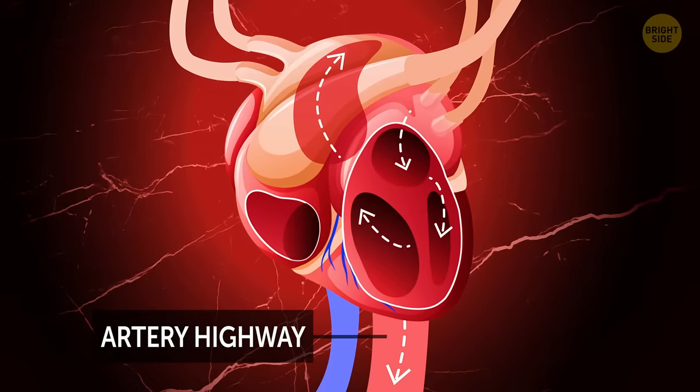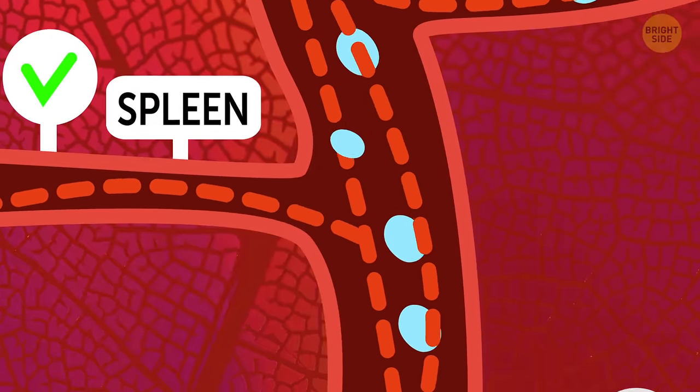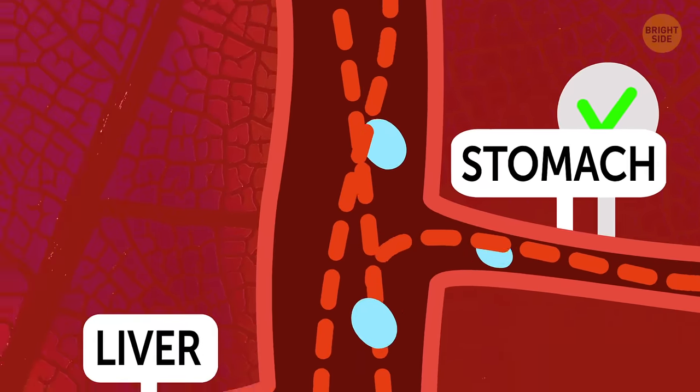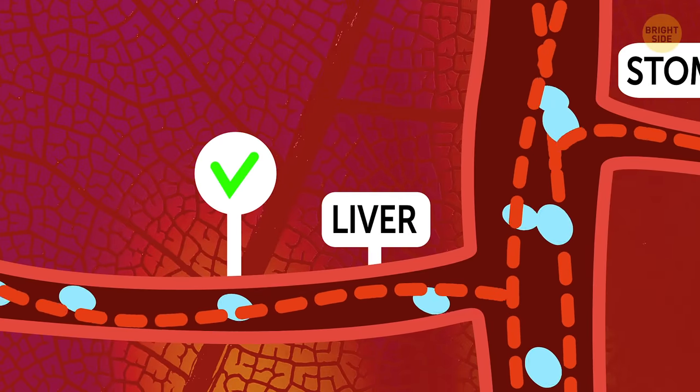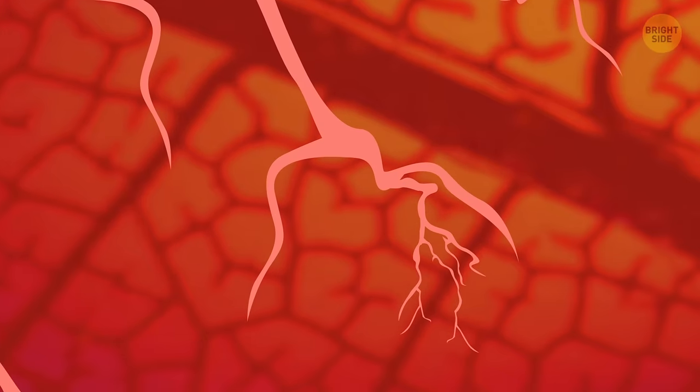Hey, don't worry, we'll be back soon enough. We're rushing fast through the body delivering this oxygen supply to every organ, muscle, tissue, and cell. Oxygen delivery for the liver. Please sign here. I've got an oxygen package for the kidneys. Here you go. Our tunnel gets smaller and smaller as we get off the main artery highway onto smaller arterial streets and finally into tiny alley-like capillaries.